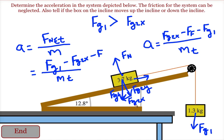So, depending on the relative strength of force gravity 1 and force gravity 2 x, we will either calculate the acceleration of the block up the incline or the acceleration of the block down the incline.